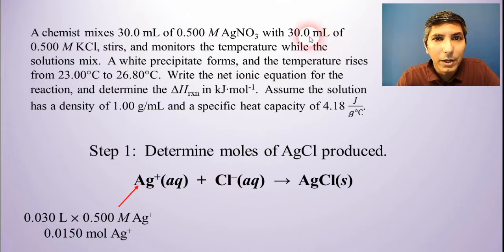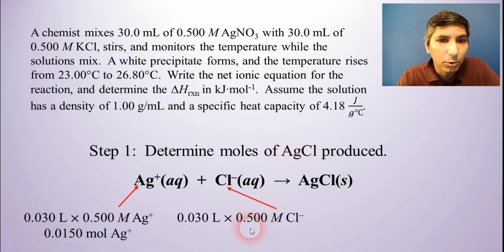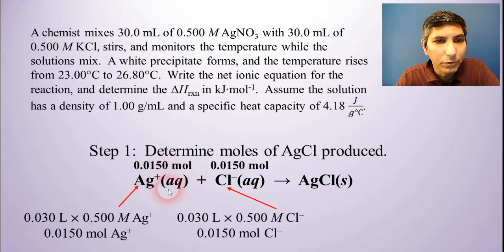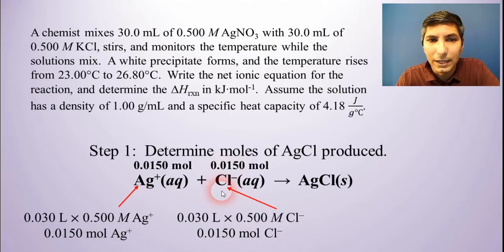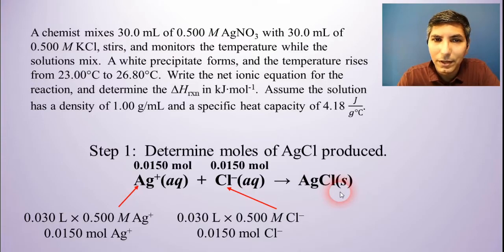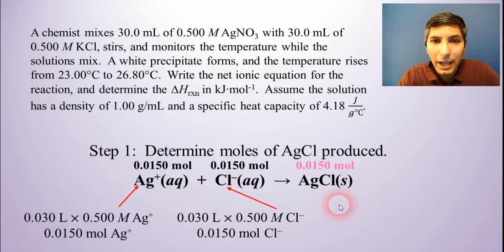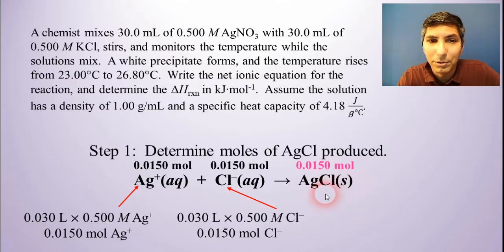Now for chloride, it's done the same way. We take the 0.03 liters of chloride times that by 0.5 moles per liter. And of course, that's going to give us the same number, 0.0150 moles of chloride. So let's think about this in terms of the stoichiometry. If we're starting with 0.015 moles of silver ions and 0.015 moles of chloride ions, how many moles of silver chloride will we get as our product? Well, it's a 1 to 1 to 1 ratio as you look at the moles here, the mole ratio.